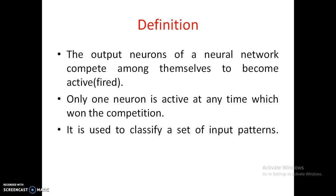The competitive learning rule is used to classify a set of input patterns. Out of all the neurons in the output layer, only one neuron will fire, and the input pattern will be assigned to one classification. If a different input is given, a different neuron may fire, and that input pattern goes to a second classification. In this way, input patterns can be classified.